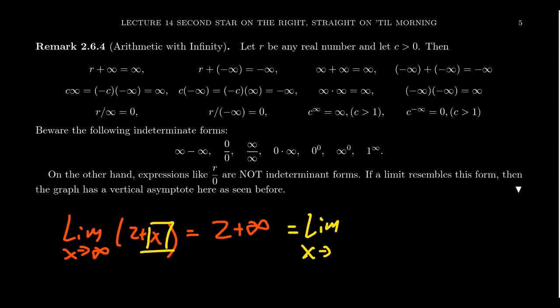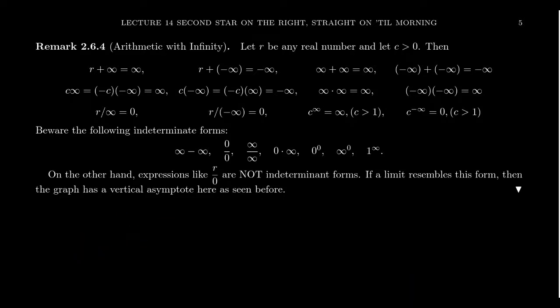Now, this is very dark magic. Whenever we make an arithmetic statement with infinity — like r plus infinity, r divided by infinity, infinity times infinity — these are really just shorthand statements for limit calculations, so one has to tread very lightly. If I were to liken these calculus calculations to chemistry, we are now verging on alchemy. Doing arithmetic with infinity is essentially the calculus equivalent of human transmutation. One has to be very careful. Horrible things have happened to alchemists who played around with the laws of equivalent exchange. We are really becoming full-metal numerologists at this moment.